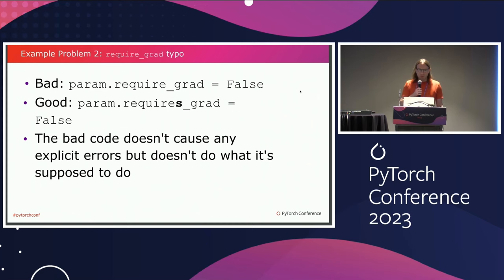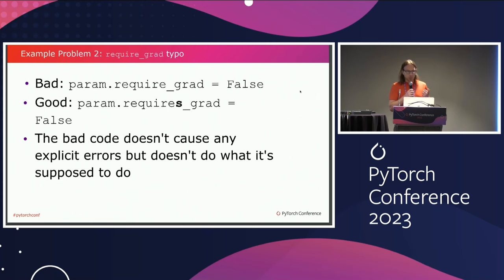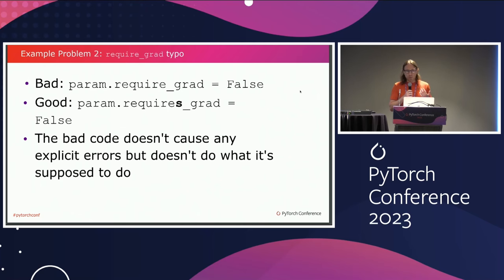Another example. Sometimes you don't want to compute gradients for your parameters, usually for performance reasons. To tell PyTorch you don't need gradients, you set the requires_grad attribute to false. Unfortunately, people often type requires_grad false with a typo. Because it's Python, the attribute gets dynamically created and there is no error — your program continues to work, but it doesn't do what it's expected to do. This can lead to performance degradation, and it's hard to notice. This exact issue was found in multiple popular large open source repos.